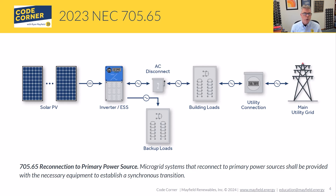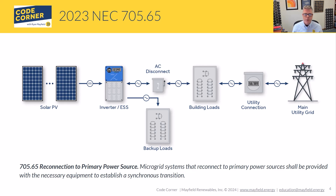On larger scale systems, you may achieve this through relay systems, motorized breakers, or contactors — there are multiple ways to accomplish this. A big part of it comes down to what the utility allows. Regardless of the method, the microgrid system must establish that synchronous transition, which is one of the key requirements to be truly a microgrid system adhering to Article 705.